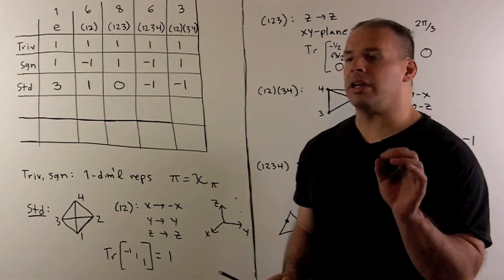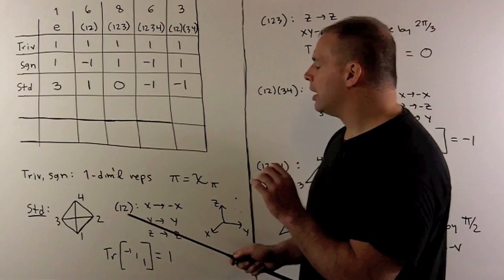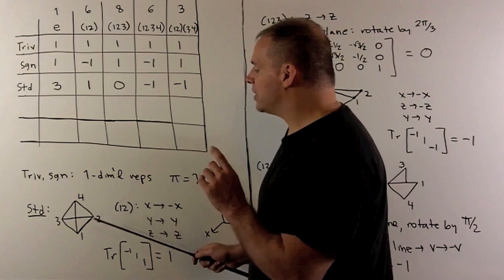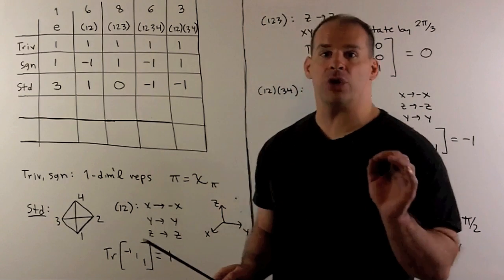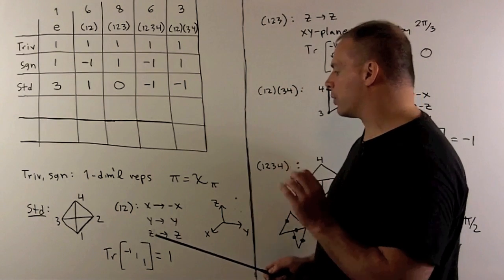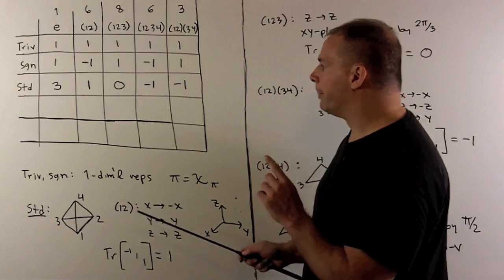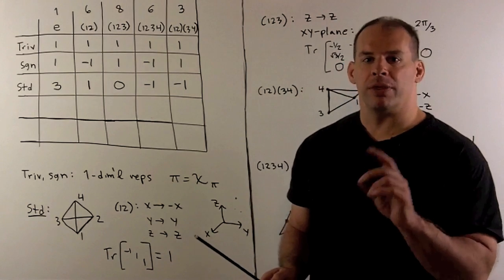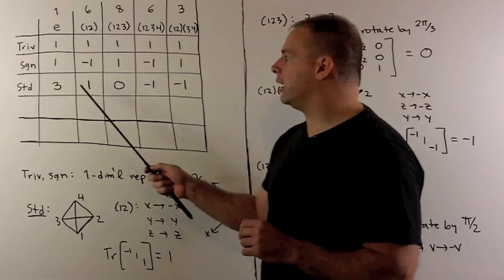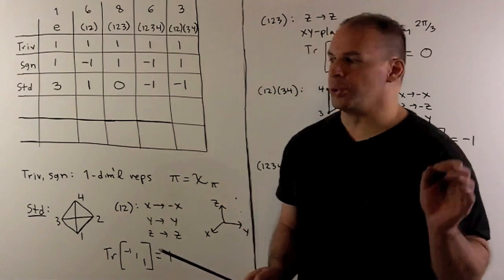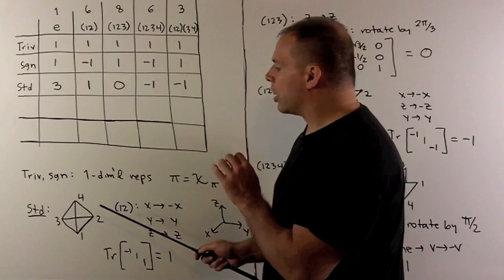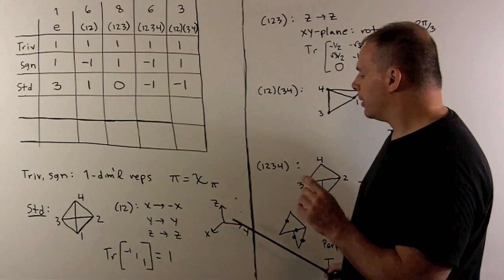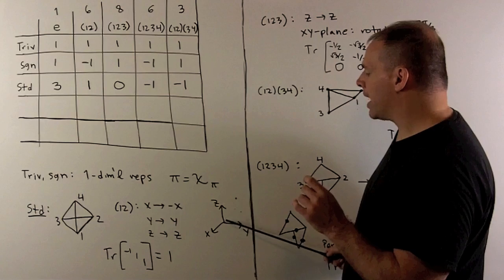For another irreducible representation of S4, we consider the regular tetrahedron centered at the origin in R3. The symmetries of this tetrahedron induce linear transformations in R3 — we'll call this the standard representation. We orient the tetrahedron so that the positive x-axis points out of the board, the positive y-axis points to the right, and the positive z-axis points up.